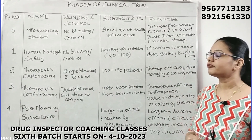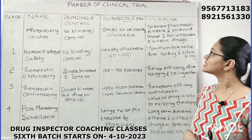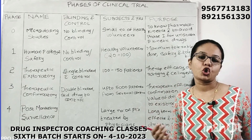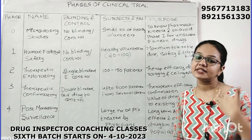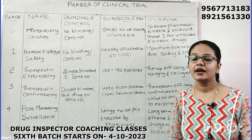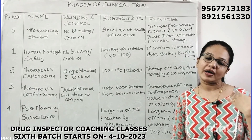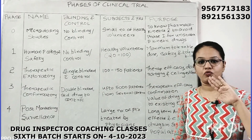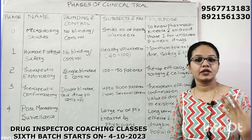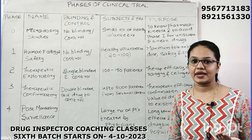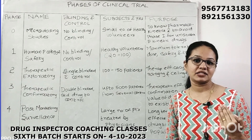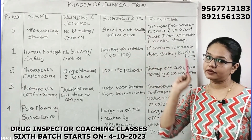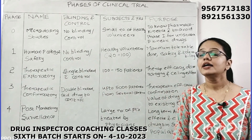The purpose of Phase 0 is to know the pharmacokinetic characteristics of the drug, and also to avoid sending drugs with unsuccessful pharmacokinetics into Phase 1. If a drug fails in Phase 0, we separate it from Phase 1. We need to establish pharmacokinetic effects in Phase 0 so we don't need to repeat them in Phase 1.